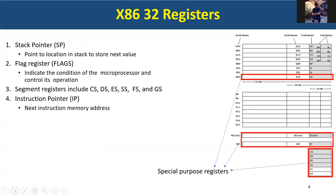If there are general purpose registers, there are of course special purpose registers — like those highlighted in red: RSP, the FLAG register, the RIP, and the segment registers. As we go deeper into the course, we're going to highlight these in more detail. We're going to learn more about the FLAG register at the end of a later video.